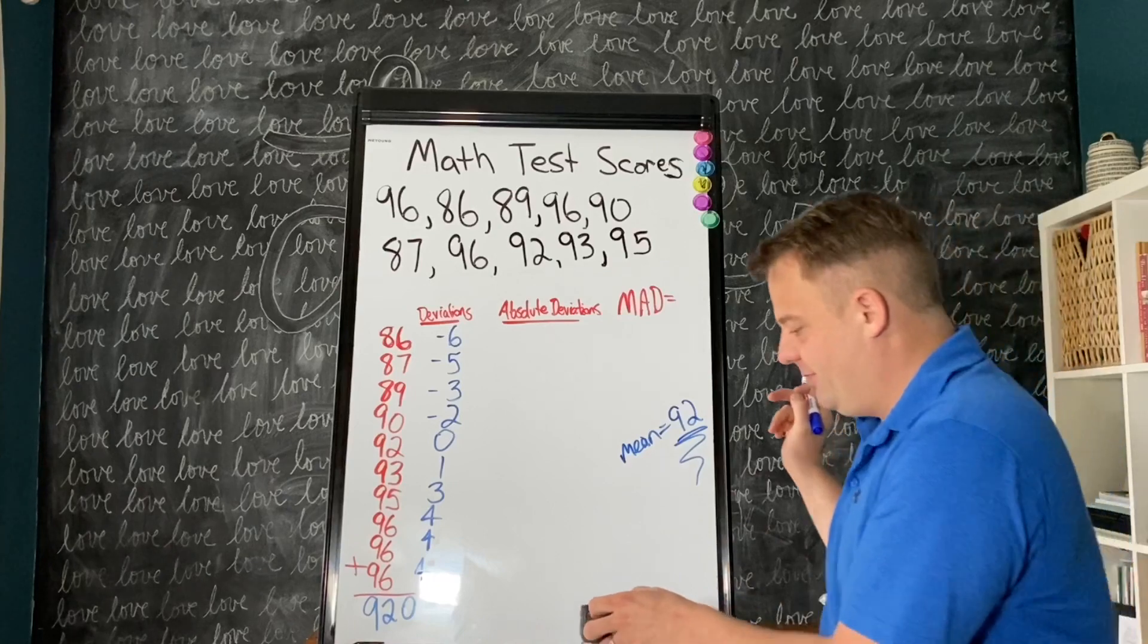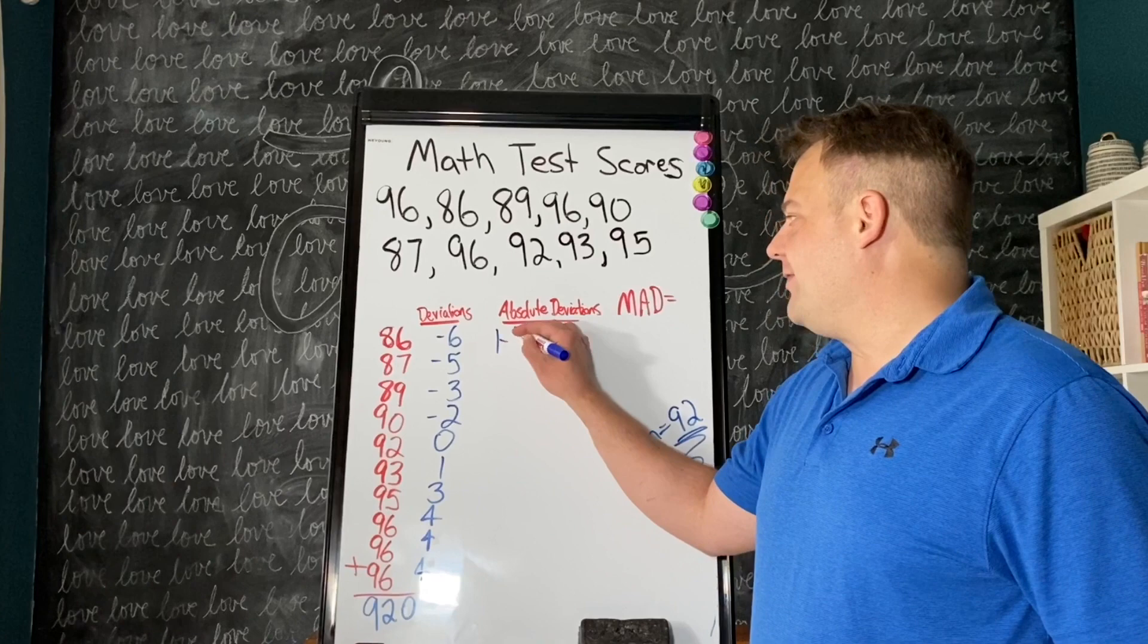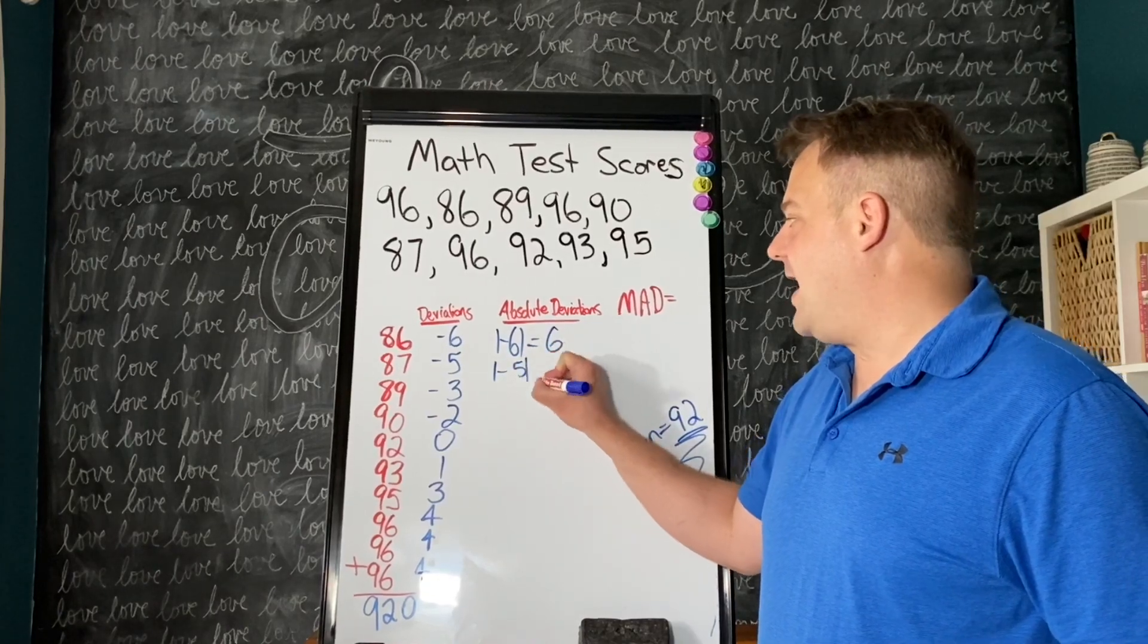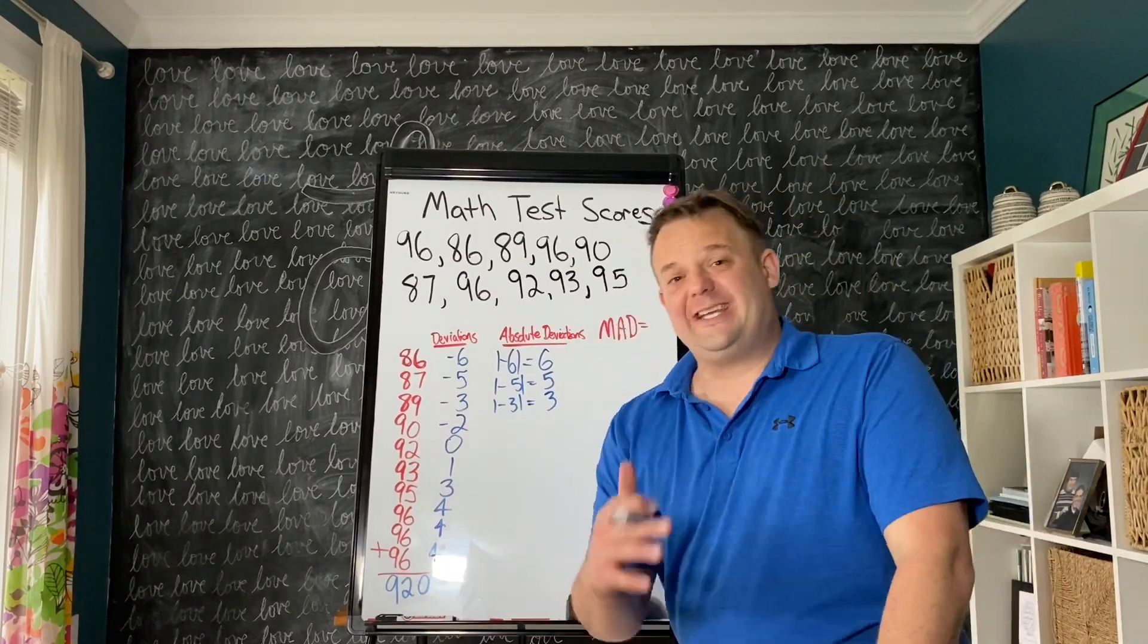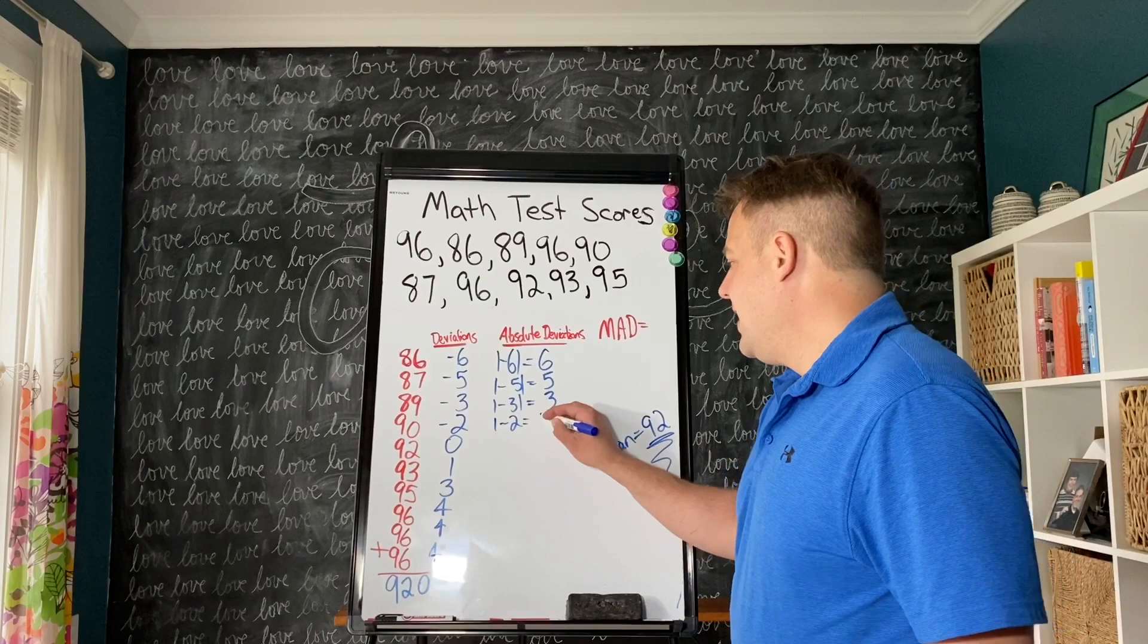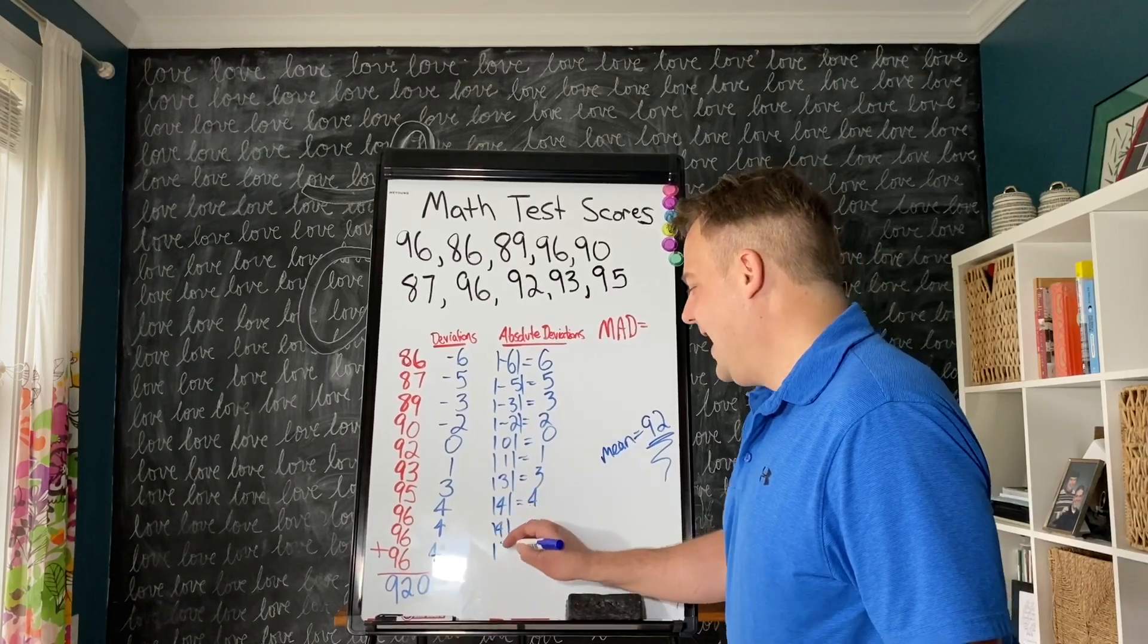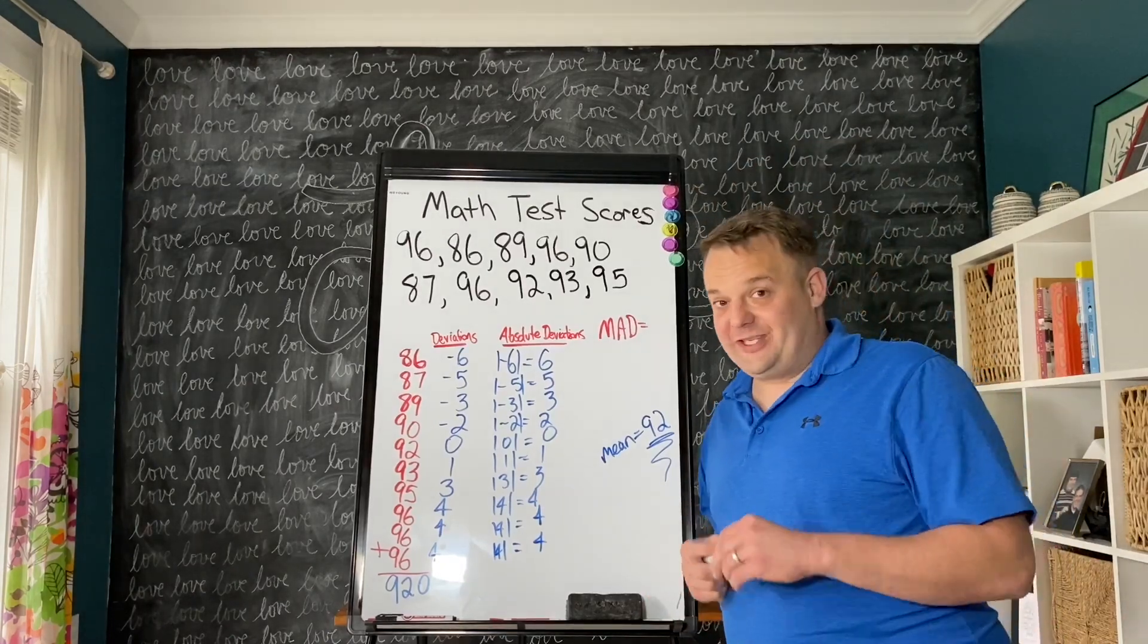Now we're going to do the absolute deviations. What's the absolute value of negative 6? It's 6. Absolute value of negative 5 is 5. Absolute value of negative 3 is 3. Absolute deviations are easier because they're all positive. The absolute values are: 2, 0, 1, 3, 4, 4, 4. Now that we have all the absolute deviations, we need to find the mean of the absolute deviations.